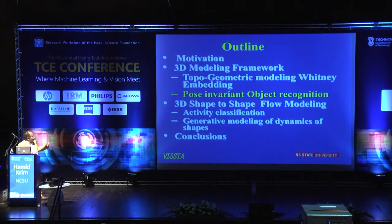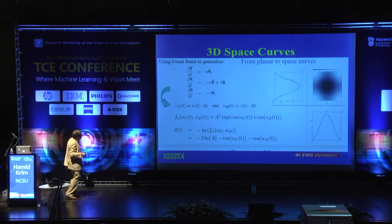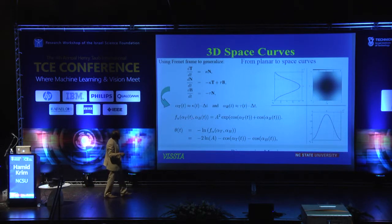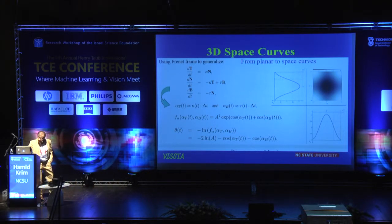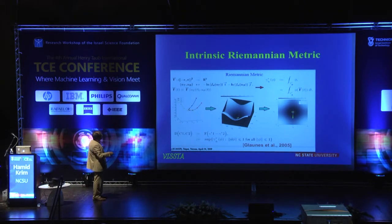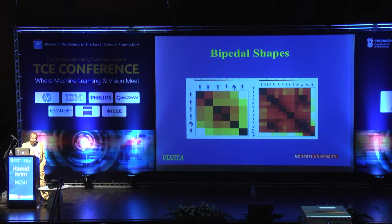Now how do you use this? It turns out you can exploit the curvature of your curve as well as the binormal, and define turning angles in terms of the curvature and tau. You can associate a distribution — called the von Mises distribution — to these two parameters. And you can define a Riemannian metric on this and do a classification of 3D shapes.